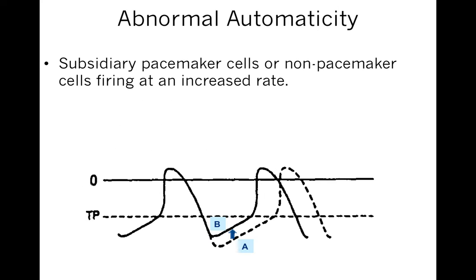Abnormal automaticity: pacing cells within the heart, such as the AV node, sinus node, or His-Purkinje system, are able to auto-depolarize and generate action potentials on their own. They could have blunted automaticity, which can lead to bradycardias, but they can also have increased automaticity, leading to tachycardias.